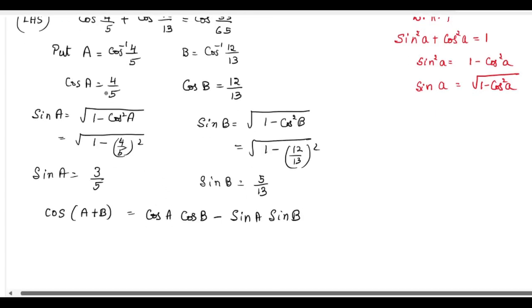Now, put the values for cos A, cos B and sin A, sin B in this formula. So we get cos A is 4 by 5 into cos B is 12 by 13 minus 3 by 5 that is sin A